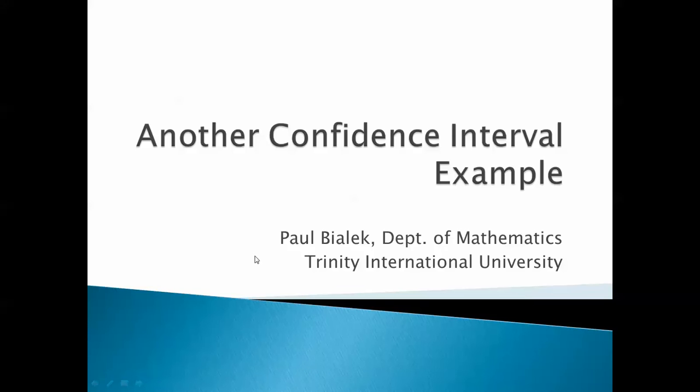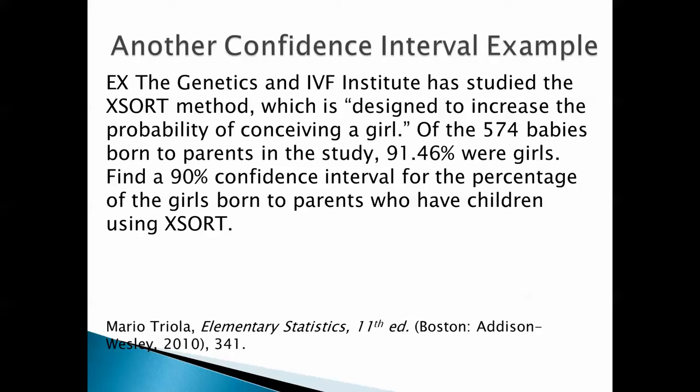Let's look at another confidence interval example. The Genetics and IVF Institute has studied the XSORT method, which is designed to increase the probability of conceiving a girl. Of the 574 babies born to parents in the study, 91.46% were girls. Find a 90% confidence interval for the percentage of girls born to parents who have children using XSORT.